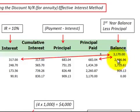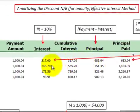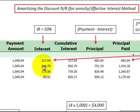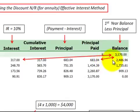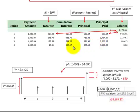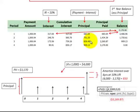This ending balance becomes the beginning balance for the next year, where we calculate interest expense by taking 10% of it, giving us interest of $248. We subtract that interest portion from the payment amount to get the principal for the year, subtract that from the beginning balance, and continue on — calculating interest, subtracting it from the payment amount, and the difference is the principal.